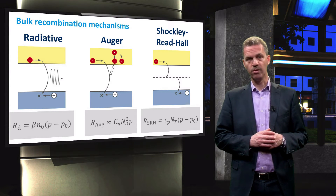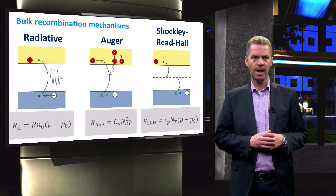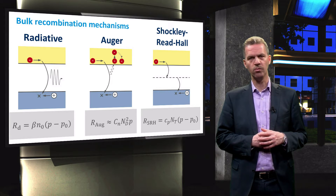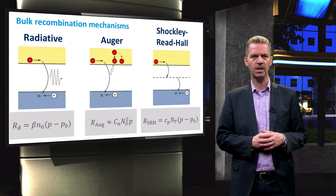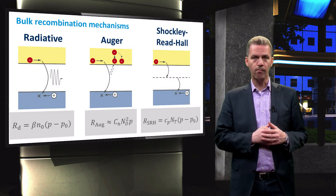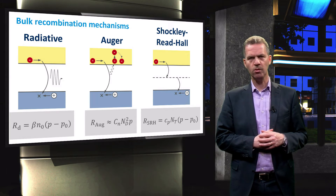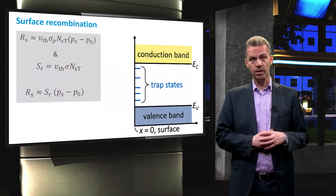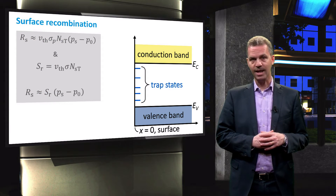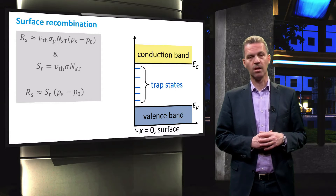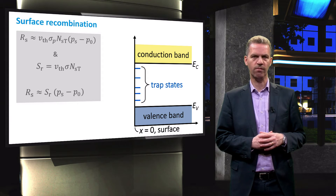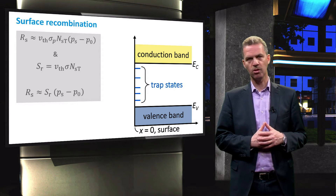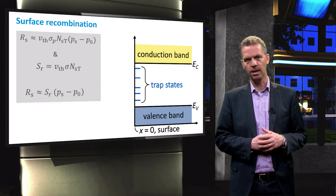For each recombination process, we have worked out the recombination rate, and here you see the rates for holes in N-type material under low-level injection. Important to notice is that the rates are proportional to the excess hole concentration P minus P0. We have considered surface recombination also, and in that case the recombination rate R_S is proportional to the excess hole concentration at the surface of this N-type material and to the surface recombination velocity S_R.